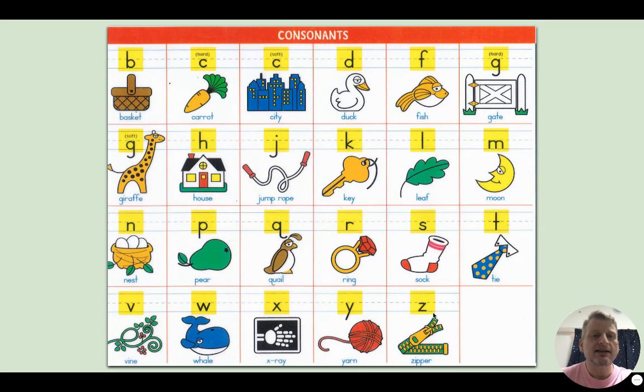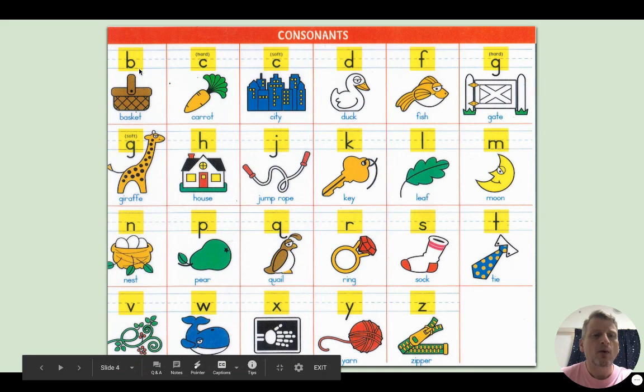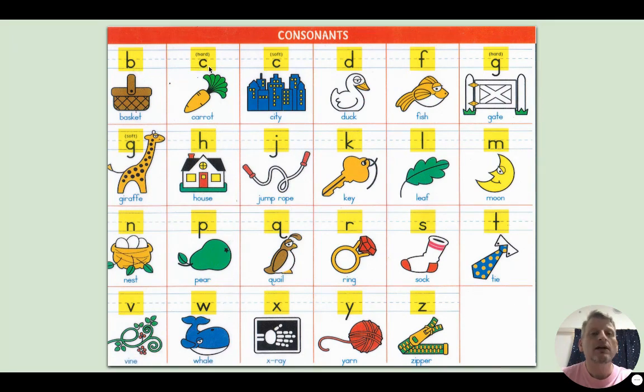Once again, let's go back to the top. We have B, b, b, basket. C, c, c, carrot.